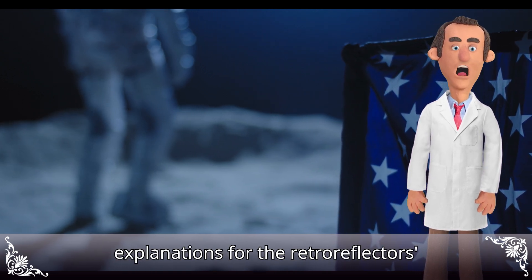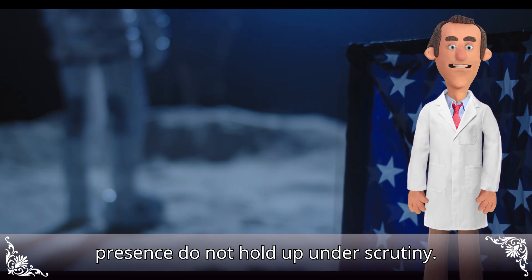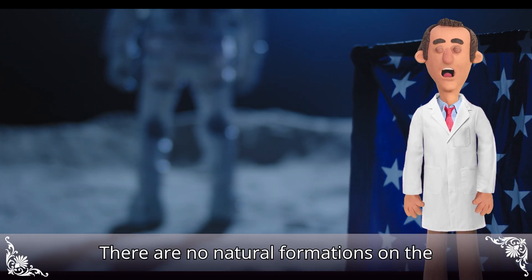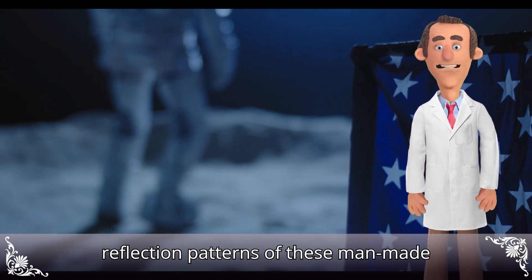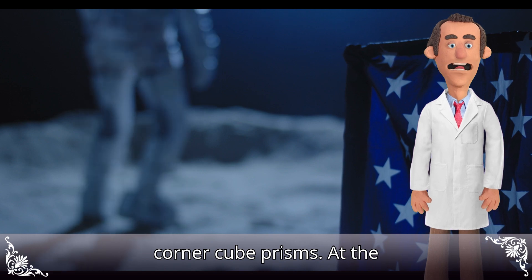Alternative explanations for the retroreflectors' presence do not hold up under scrutiny. There are no natural formations on the Moon capable of mimicking the precise reflection patterns of these man-made corner-cube prisms.